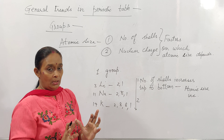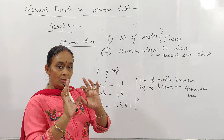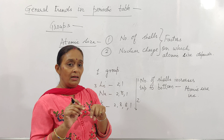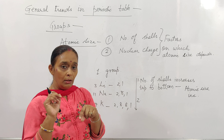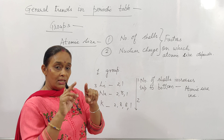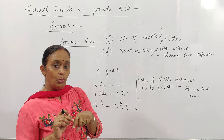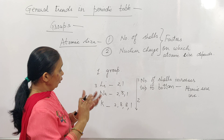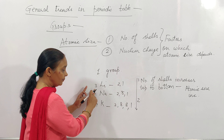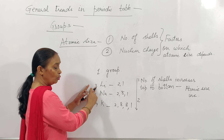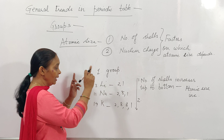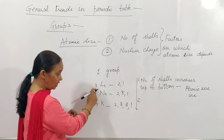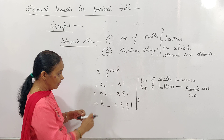Now we will be discussing certain properties of the elements when we move from top to bottom in a group. Let us see the first property, that is atomic size.